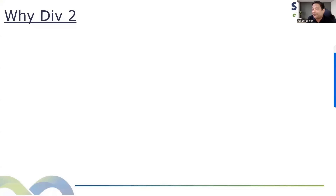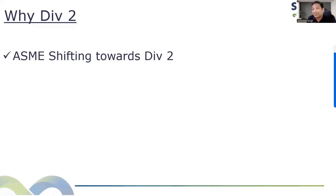Why should we learn Division 2? ASME is also shifting towards Division 2 — UHX was moved from Division 1 to Division 2, and they want to make Division 2 Part 4 very complete. Division 2 is not the alternative rule — actually Division 3 is what we call the alternative rule. Division 2 Part 4 is again designed by rule, very similar to Section 8 Division 1 design, and Part 5 of Division 2 is designed by analysis. Many times we think Division 2 is all analysis — it's not completely true.